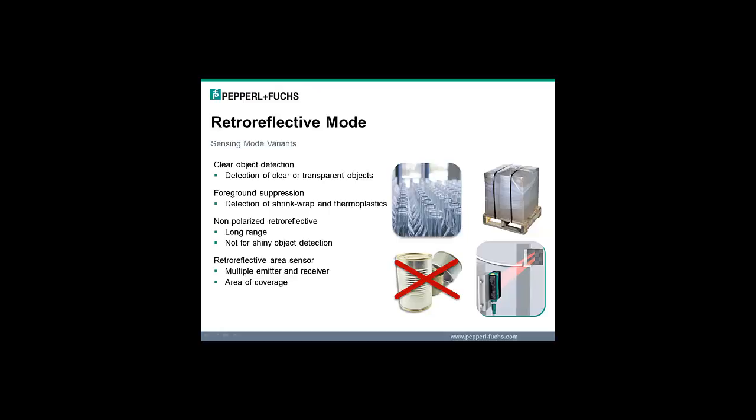Retroreflective mode sensors also have several special variations. These include clear object detection sensors which reliably detect clear or transparent objects, foreground suppression sensors that reliably detect shrink-wrapped pallets and some thermoplastics, non-polarized retroreflective sensors which have higher detection ranges compared to polarized retroreflective sensors but are not recommended for shiny object detection, and retroreflective area sensors which have multiple emitter and receiver elements that provide an area of coverage.